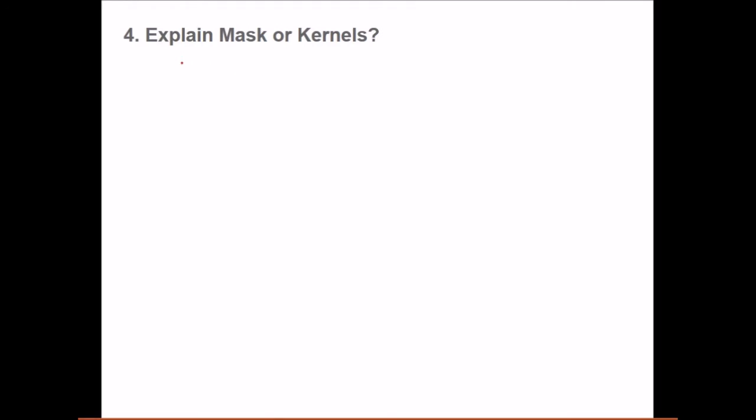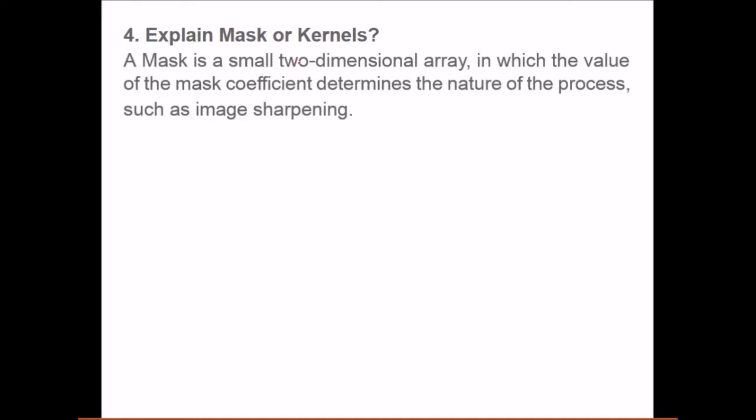What are masks or kernels? A mask is a small two-dimensional array. You can assume it like this. Say a 3 by 3 mask is there. This is an array in which the value of the mask coefficient, say some values are there like 0, 0, 0, and 0, 0, 0, 0, 0, and 4 is there and then 0. On the center one this is 4, otherwise all surrounding are 0. These are the mask coefficients which determine the nature of the process such as image sharpening or image blurring.